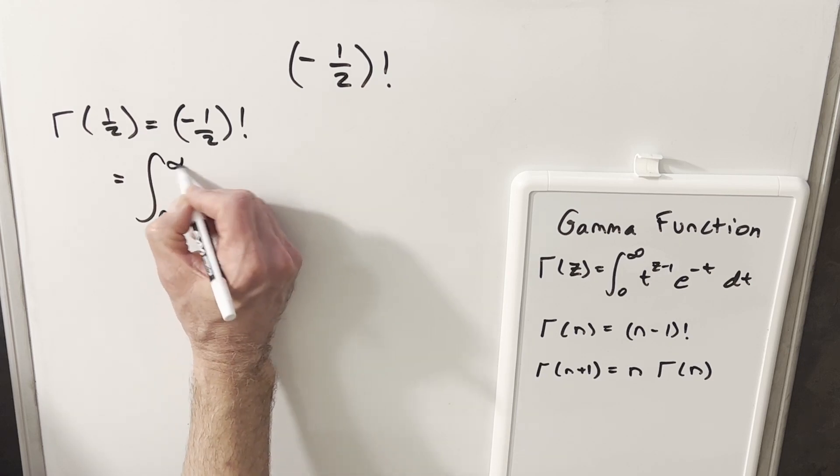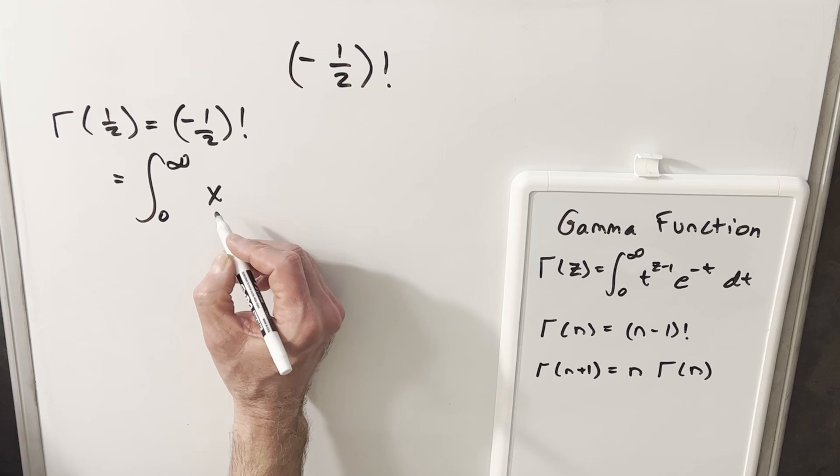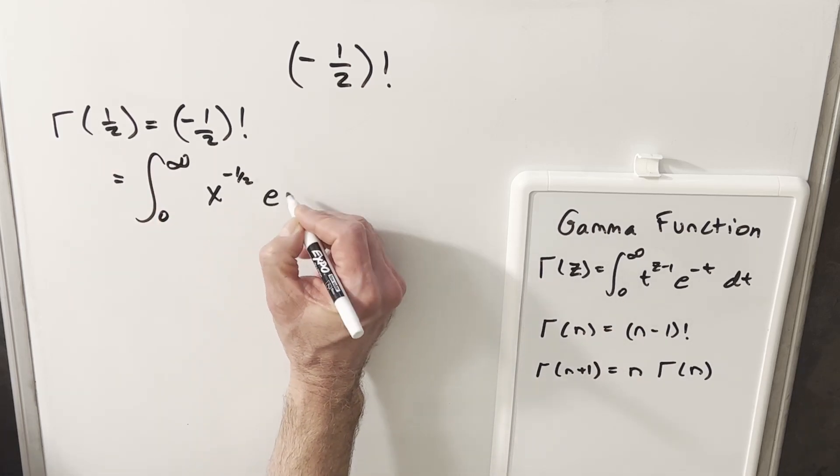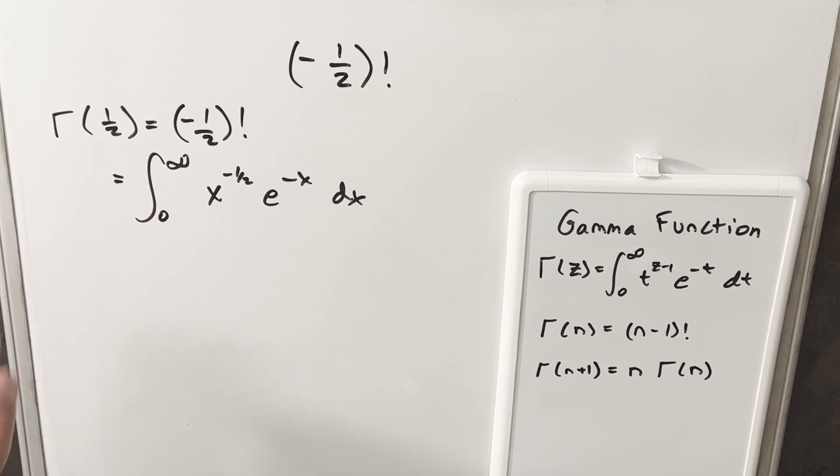Okay, so we're looking at the integral from zero to infinity. Instead of using t, let's just use x. And then our input's a half. So half minus one, we're going to have a minus one-half on here, e to the minus x dx. So now we just need to work through this integral and see if we can find a nice value for this thing.